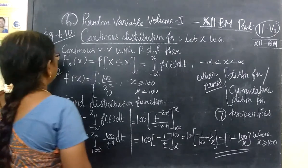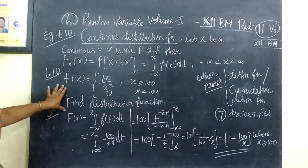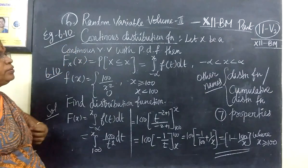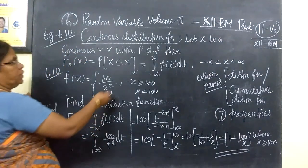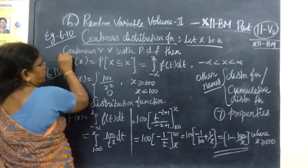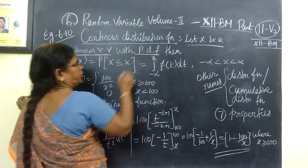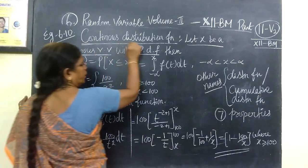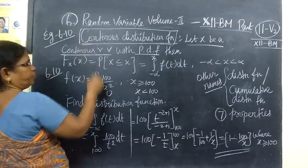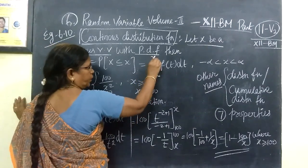Next one is HR 6.10. This is the definition of continuous distribution function. This is x — a continuous random variable. Continuous random variable with probability density function. The continuous distribution function is defined by the integral from minus infinity to x.